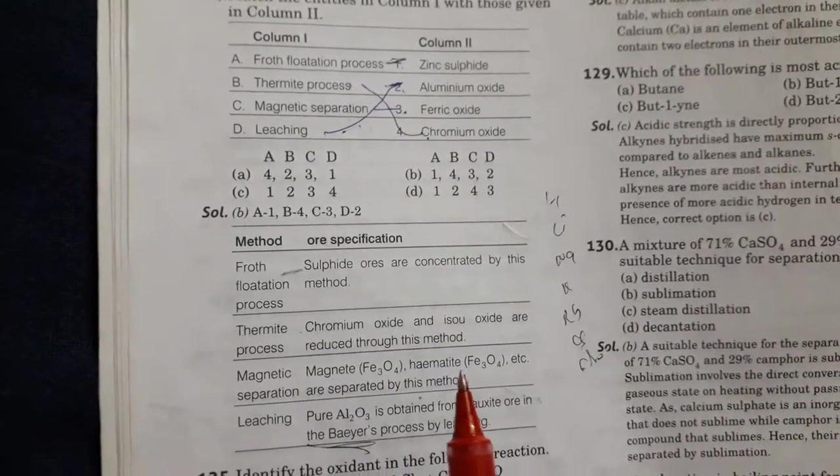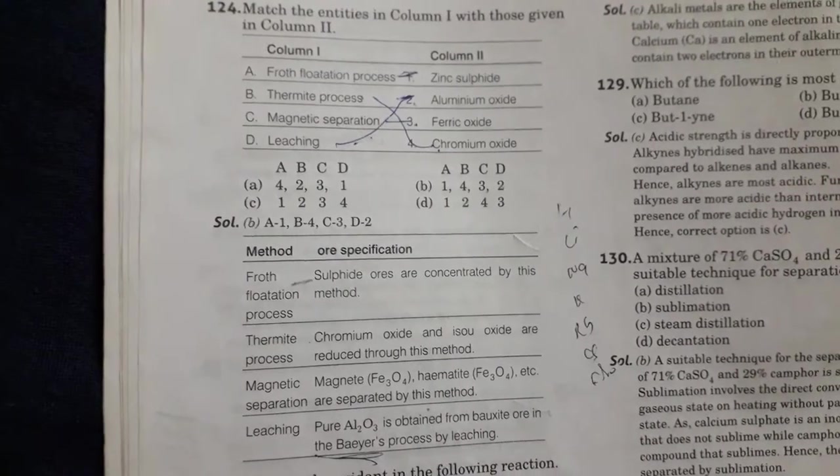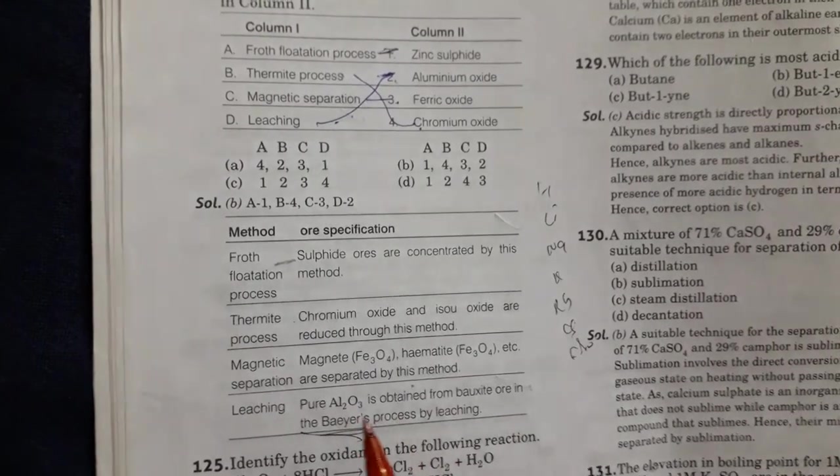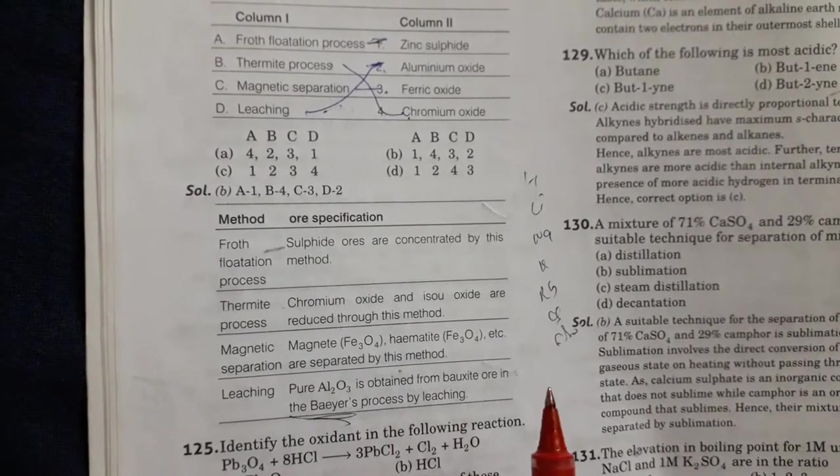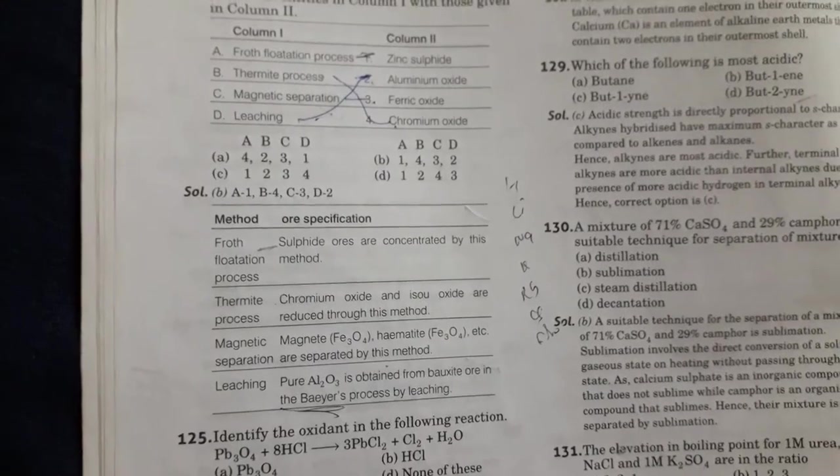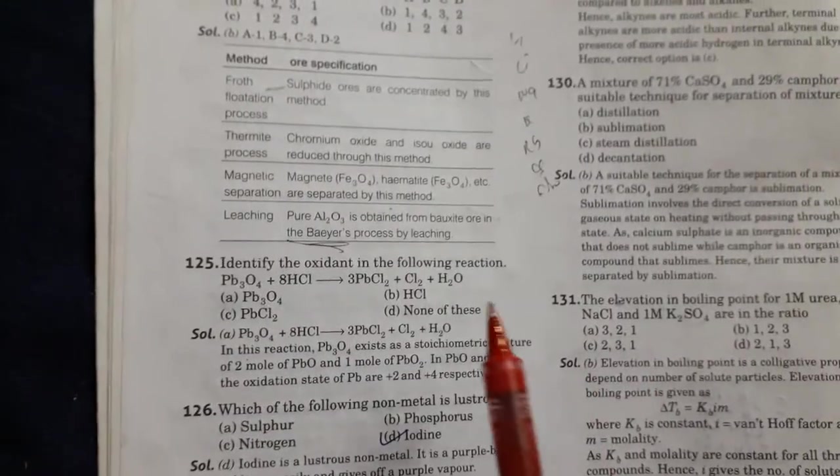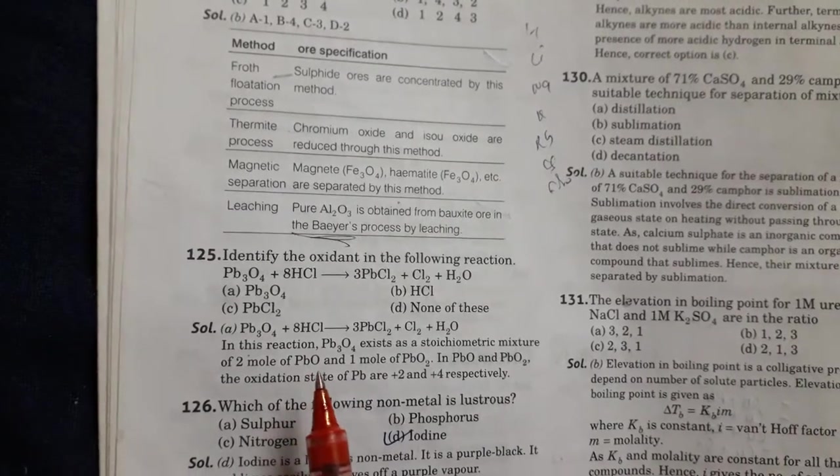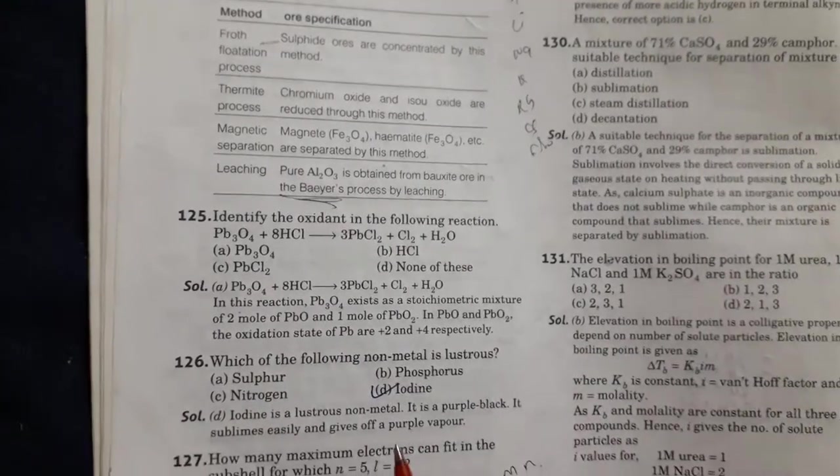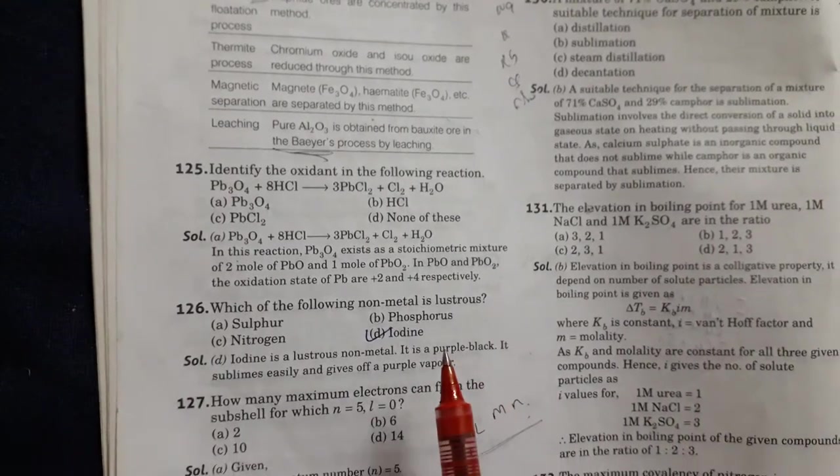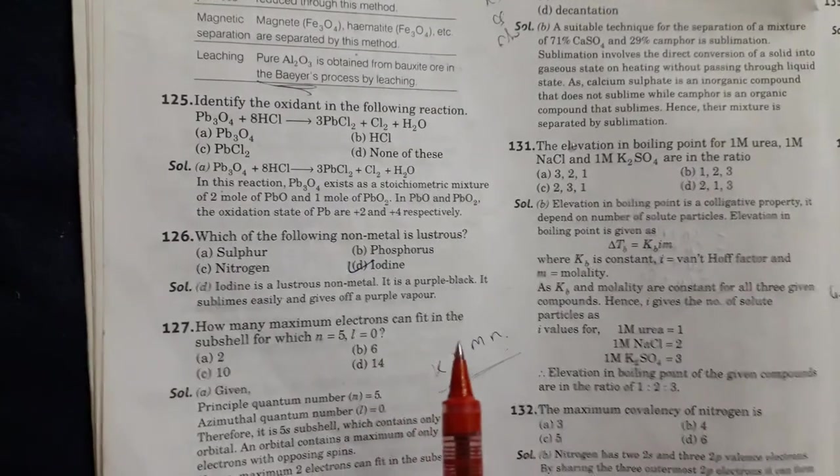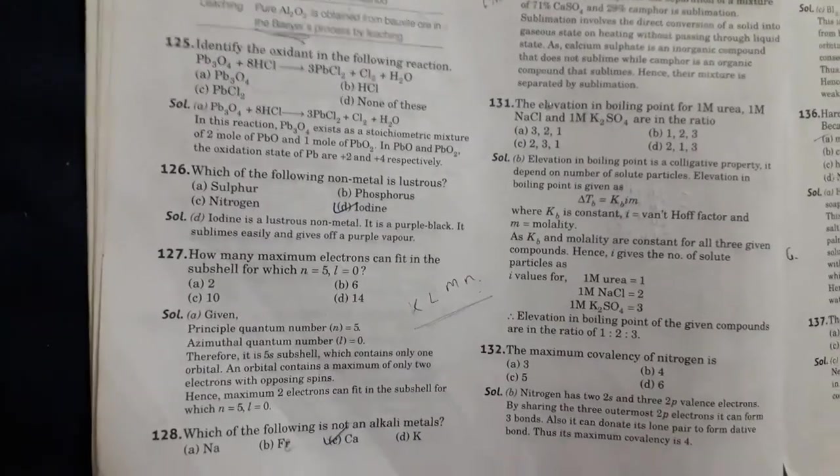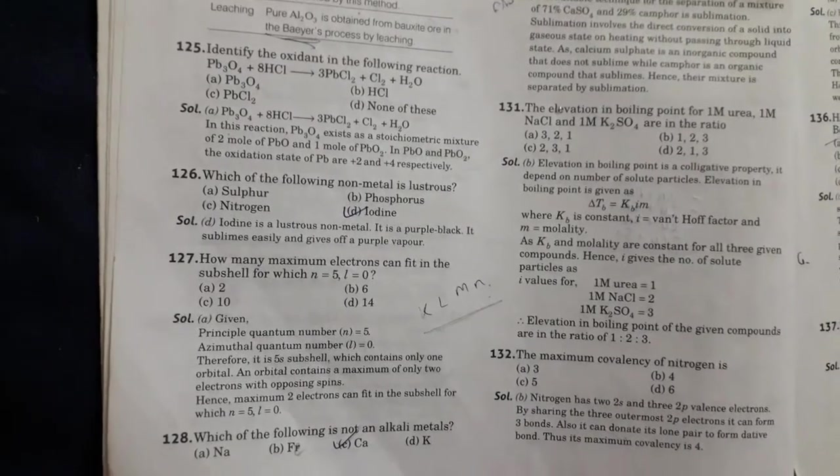Then thermite process: chromium oxide and oxides are reduced through this method. Then next is magnetic separation for magnetite hematite etc. Then leaching: pure Al2O3 is obtained from bauxite ore in the Bayer process by leaching process. Identify the oxidant in the following reaction. So Pb3O4 is used in this reaction. Then which of the following is not an alkali metal. So calcium is not alkali metal.